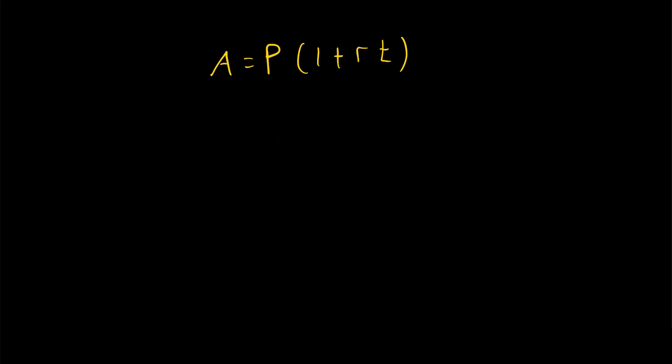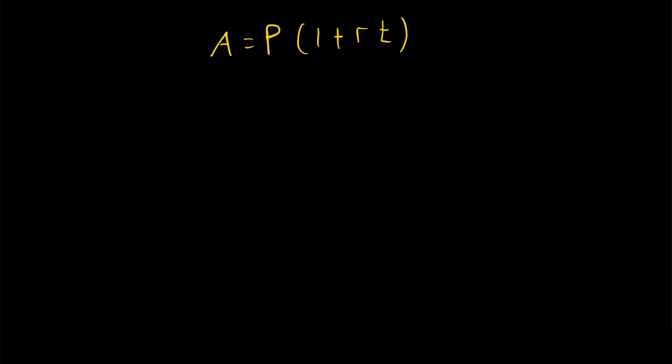Remember where this formula comes from: we have 1 because that keeps our principal amount in the account, and then P is also multiplied by rate times time because that's how simple interest is being earned.